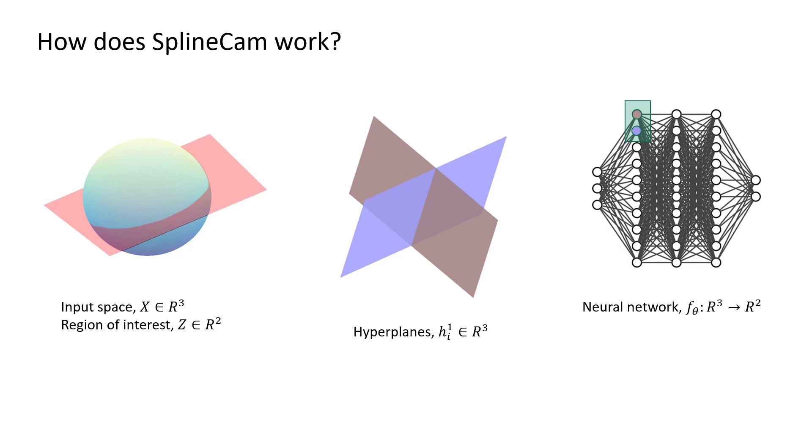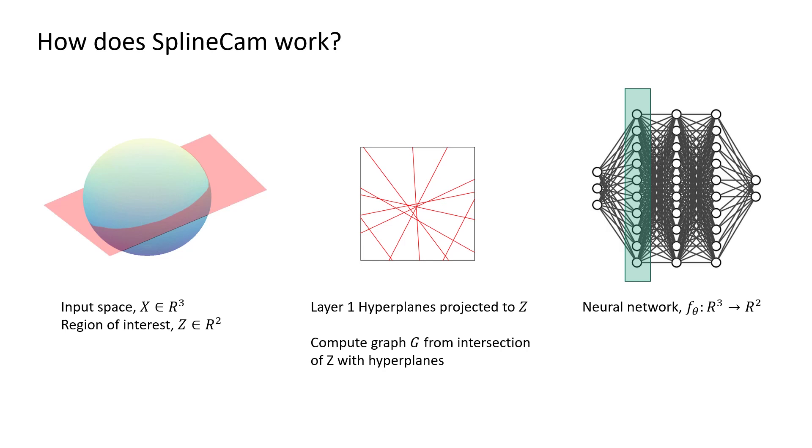Each neuron from any given layer of the deep network divides the input space into positive and negative half-spaces. Therefore, any ReLU-activated neuron can be represented as a hyperplane, as its zero-level set. Since all the hyperplanes of the first layer are in R³, we project the hyperplanes on the region of interest Z.